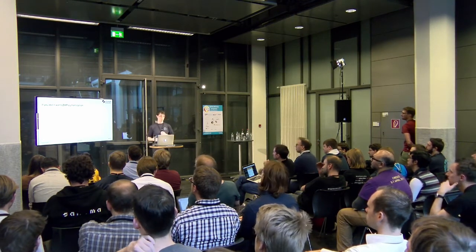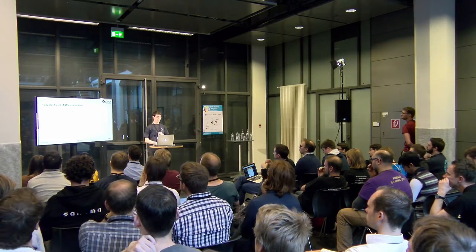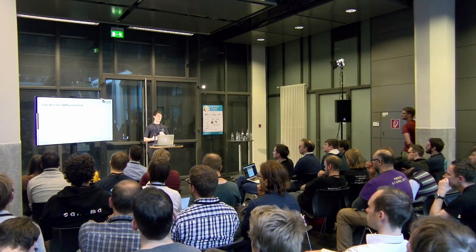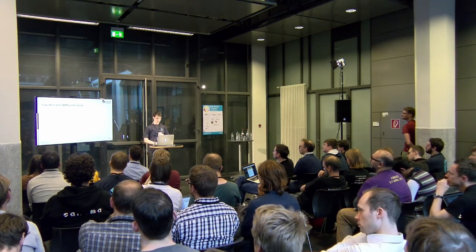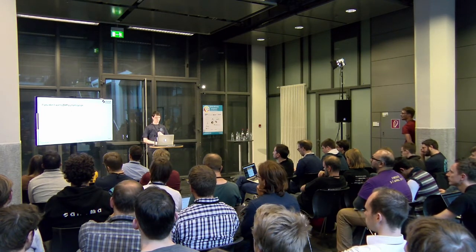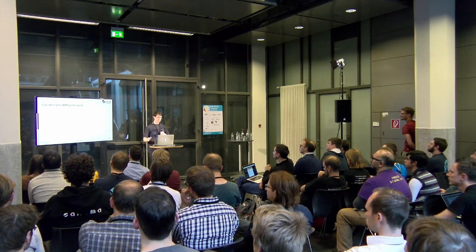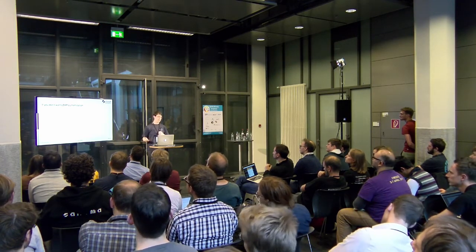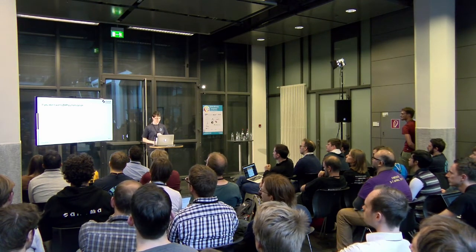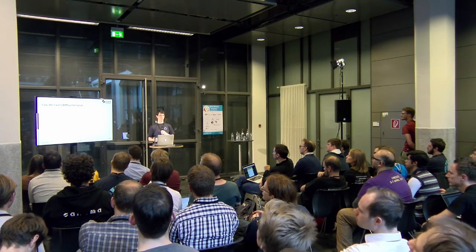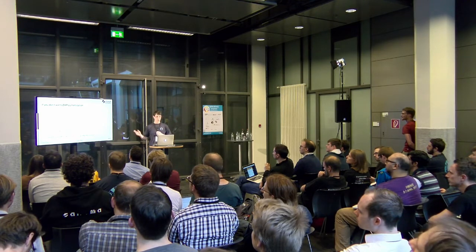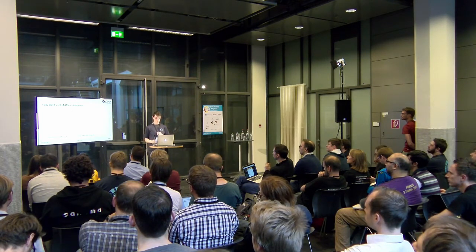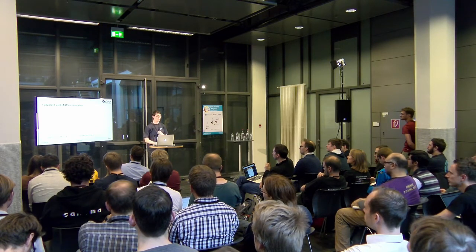To extend JupyterHub you subclass the Authenticator class. All you need is one method: a Tornado coroutine called authenticate, which receives the username and password. If they are correct, you return the username and JupyterHub handles the rest. If not, you return nothing and JupyterHub handles that too. To use it, you set the Authenticator class in your configuration to your actual class object — and that's it. Afterwards you have your simple authenticator.